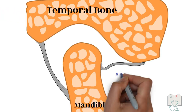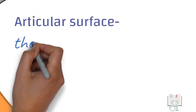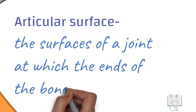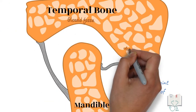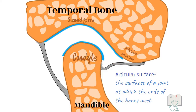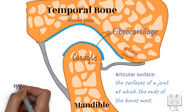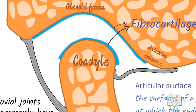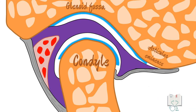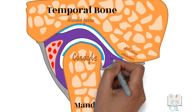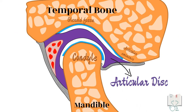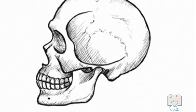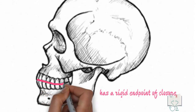The temporomandibular joint's articular surfaces — that is, the surfaces of the joint at which the ends of the bones meet — in this case the glenoid fossa, articular eminence, and condyle, are covered by fibrocartilage, even though synovial joints more commonly have hyaline cartilage. A disc runs between the articular surfaces, dividing the joint space into two compartments, called the articular disc. The temporomandibular joint has a rigid end point of closure, that is the place where teeth make contact.